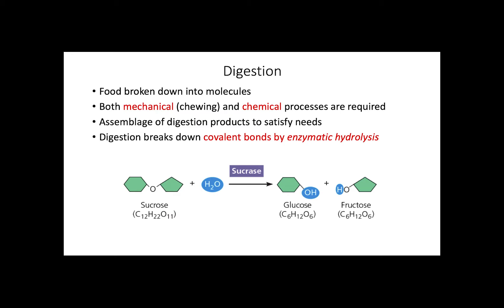To some extent, these processes are reversible when small building blocks are linked together to make large macromolecules. In the example shown, a polysaccharide, sucrose, is being split into simple sugars, glucose and fructose, which can then be used in cellular processes to produce energy.